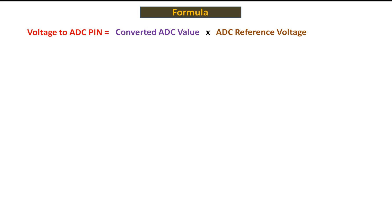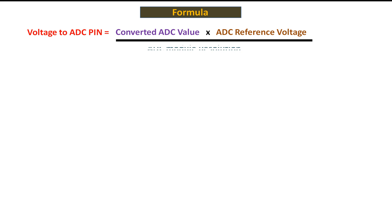The ADC module is built inside the microcontroller; it is a built-in function. In some microcontrollers, there is an option to separately provide a reference voltage to the ADC module. In that case, you write that reference voltage in the formula. You then divide by the ADC module resolution, which you can find in the datasheet of the respective microcontroller.